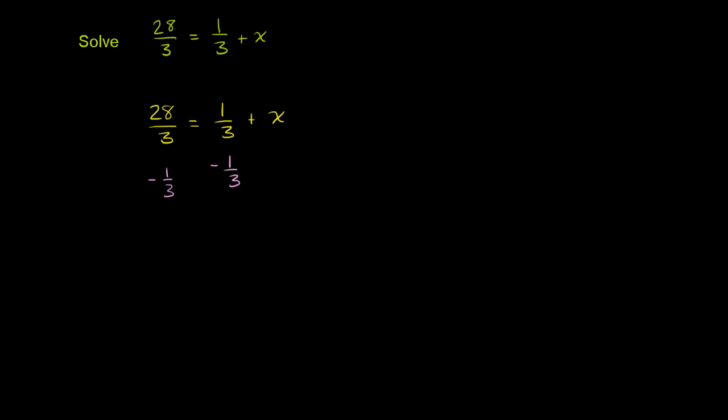On the left-hand side, 28/3 - 1/3. We have the same denominator, so that's 27/3, which is actually the same as 9. So 28/3 - 1/3 = 27/3 = 9.